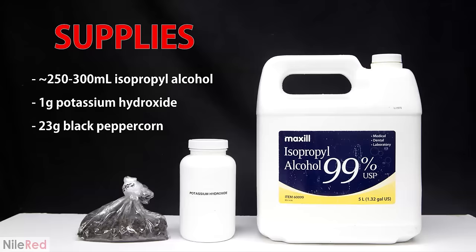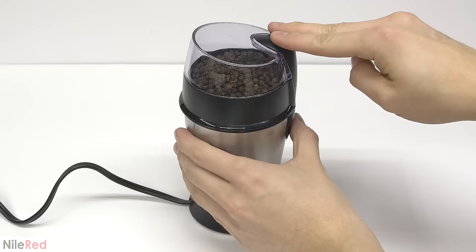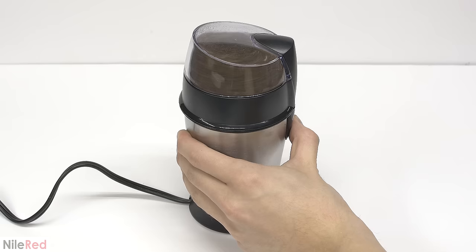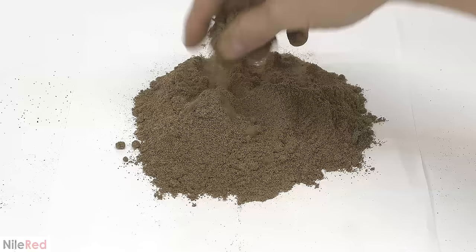In terms of supplies, I just needed three things: the pepper itself, potassium hydroxide and isopropyl alcohol. Both the potassium hydroxide and the isopropyl alcohol are food grade. The first thing that I need to do is crush the pepper, so I use a coffee grinder. It's important not to crush it too much though because if the powder is too fine, the Soxhlet extractor isn't going to drain properly.